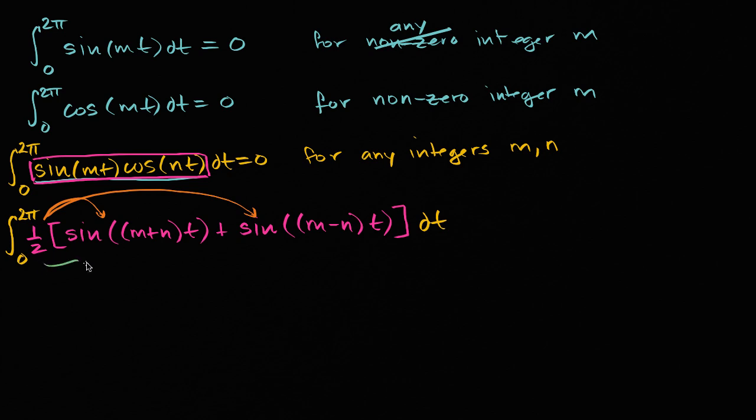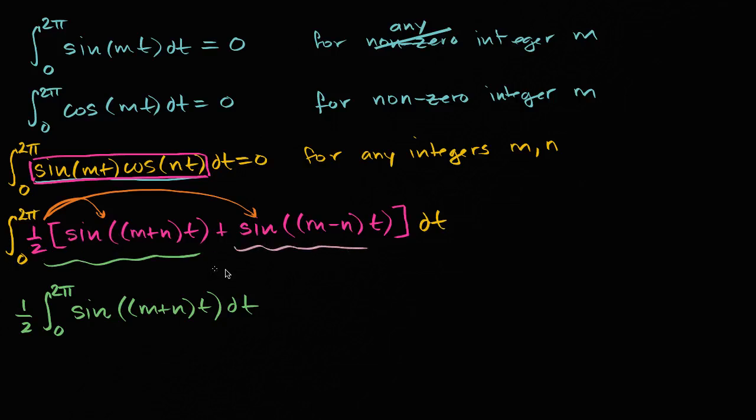This part can be rewritten as one-half times the definite integral from 0 to 2π of sin(m+n)t dt, and this part, once you distribute the one-half, is plus one-half times the definite integral from 0 to 2π of sin(m-n)t dt.